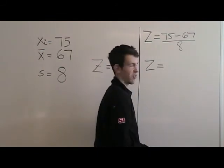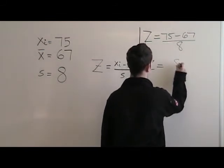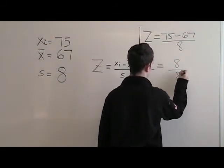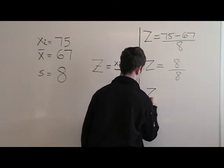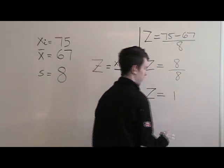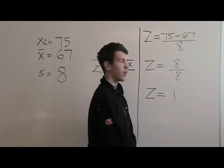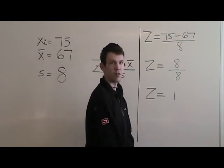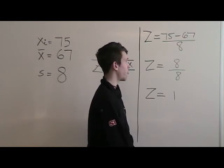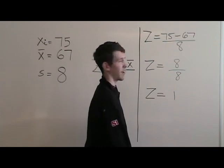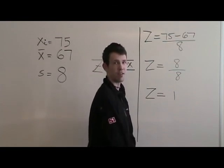75 minus 67 is 8. Divide by 8, the z-score is 1. The reason why the z-score is 1 is because the standard deviation 8 is the exact difference of the xi minus the x-bar.